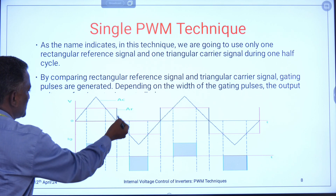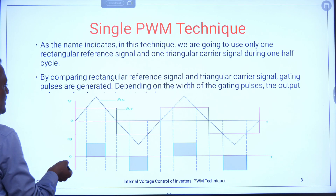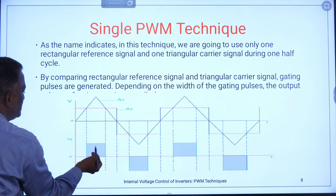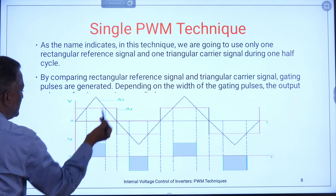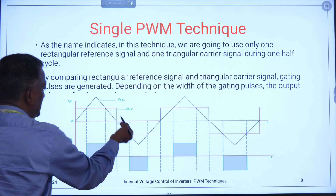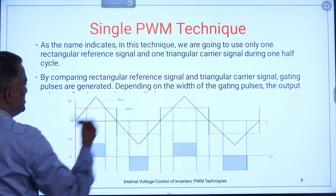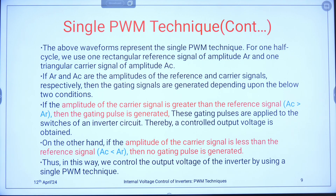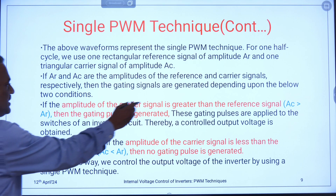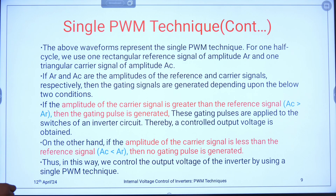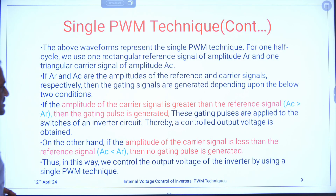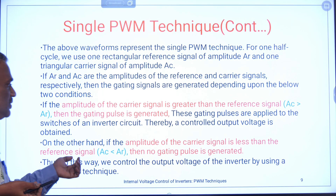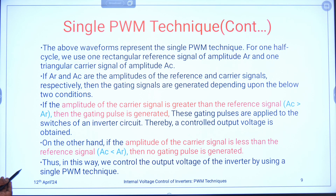This is the first half cycle. During this first half cycle, these two signals are taken into account and both are compared. When the carrier is greater than the reference, the gate pulse is generated. When the carrier is lesser than the reference signal, no gate pulse is generated. It will proceed for the next half cycle also, and the gate pulse will be generated in this way. That will be taken to the switches present in the inverter circuit. As previously mentioned, I am comparing the amplitude of the carrier signal with that of the reference signal. When it is greater, the gating pulse is generated; when it is smaller, there will be no gating pulse. Using this method, I can control the output voltage of the inverter, but here I am using only a single pulse width.